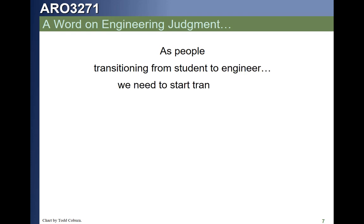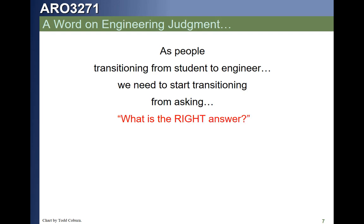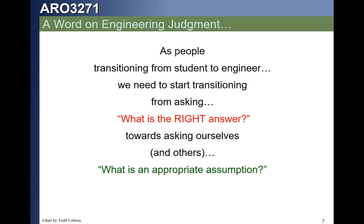This is a really good time to ask ourselves, rather than saying what answer did Coburn write at the bottom of the homework, to instead ask: what is an appropriate assumption? Recognizing there are myriads of approximate and semi-approximate numbers, ask yourself: is this assumption appropriate? How is it different from other assumptions? If a different answer is posted as the quote-unquote right answer, is the assumption you're using a valid assumption? How is it better? How is it worse?